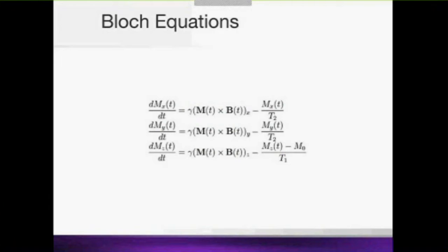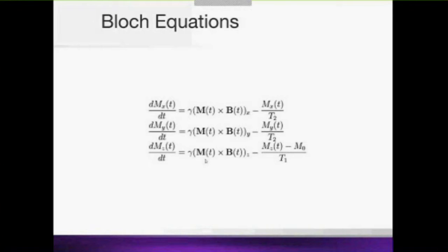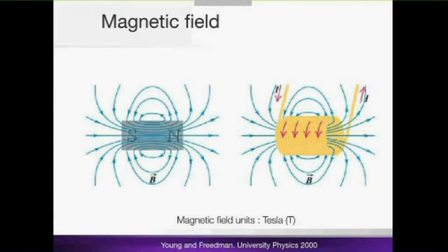If the title were 'MRI physics for physicists,' I would tell you it's very easy — simply the consequence of Bloch equations — but I'm not sure that all of you are familiar with this kind of equation, so I will try to make it more user-friendly and understandable. As I promised, it's a webinar for medical doctors, but we need to come back a little to some physics concepts which are necessary in order to understand how it works.